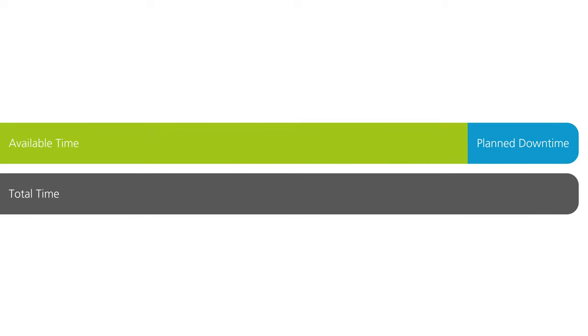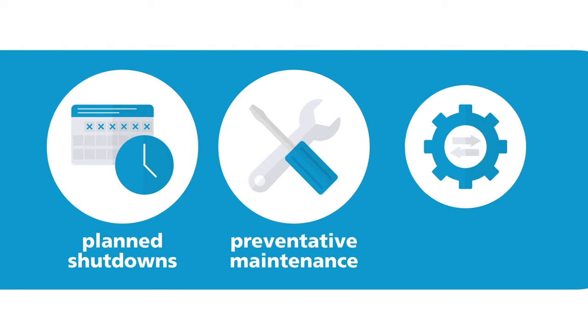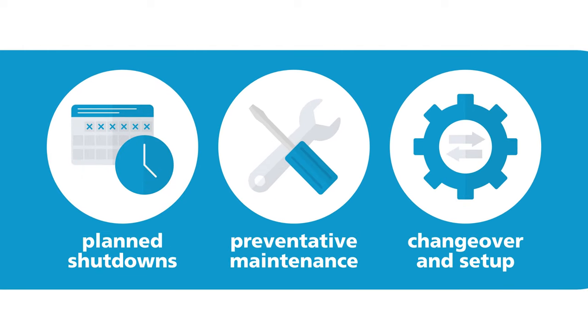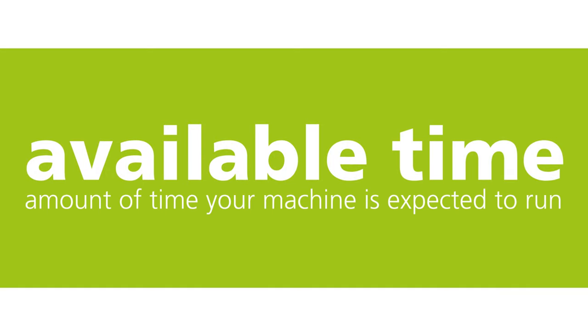Next, the blue area represents any non-worked periods due to planned shutdowns, preventative maintenance, or changeover and setup time. This is known as your planned downtime. These periods don't affect your OEE as they are planned. We subtract this from our total time, leaving us with our available time — the time we expect the machines to be running for, shown in green.